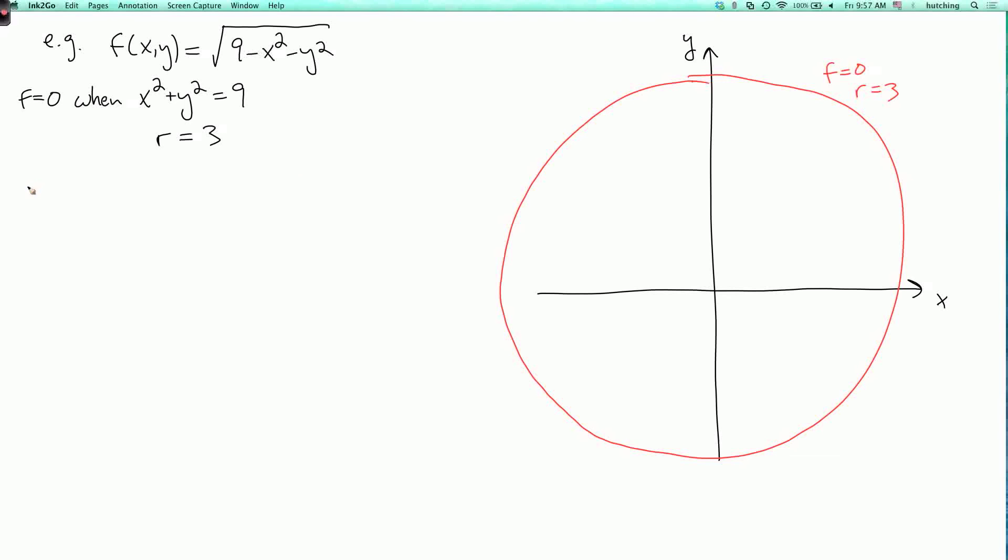Now, f equals 1 when x squared plus y squared equals 8. And this means that r is 2 times the square root of 2, which is approximately 2.82, or 2.83. So it's pretty close to 3. So the level set where f equals 1 is quite close to the level set where f equals 0. So here's where f equals 1, and r equals the square root of 8.